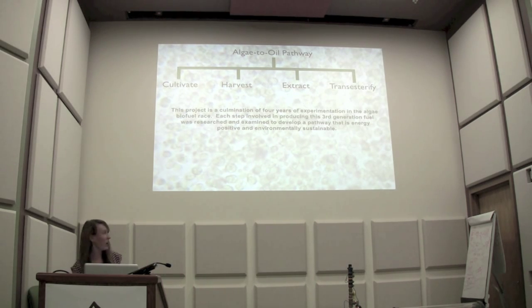So the algae to oil pathway has four steps. The cultivating, which is growing the algae. The harvesting, which is taking the algae out of the water because you can't have water when you turn it into biodiesel. Extracting, which is extracting the lipids, which are your oils, from the algae cell. And lastly, tranesterifying it, taking these oils and turning them into a biodiesel we can actually use.